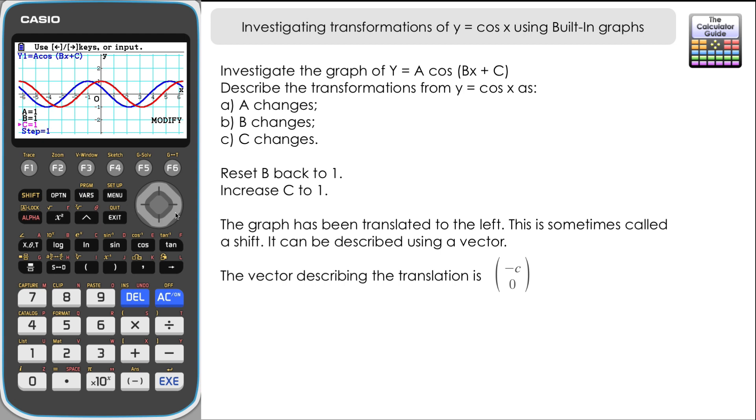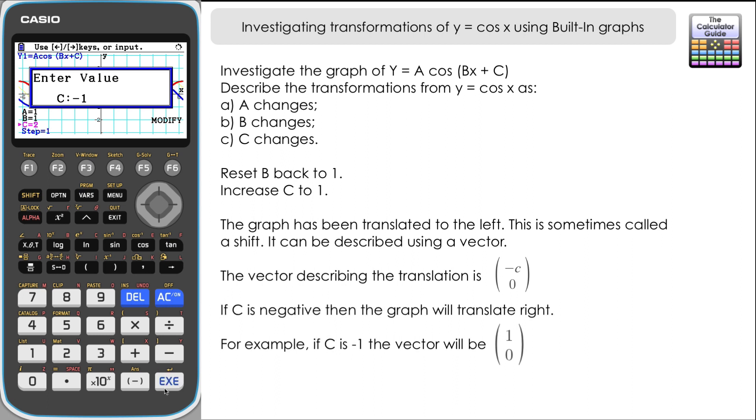Let's see what happens if we change c to two. You can see that has translated two left, so that would be by vector negative two zero. And you can see that the general rule there is that it will translate by vector negative c zero. And let's see what happens if we enter a c value of negative one. You can see we've still got a translation. This time it's moving right as we're looking at it. This would be a translation of vector one zero, but the same rule applies. It's a translation of negative c zero. The negative of negative one of course being positive one, so it translates one to the right. And therefore if you put in negative two it would be two to the right, and so on.